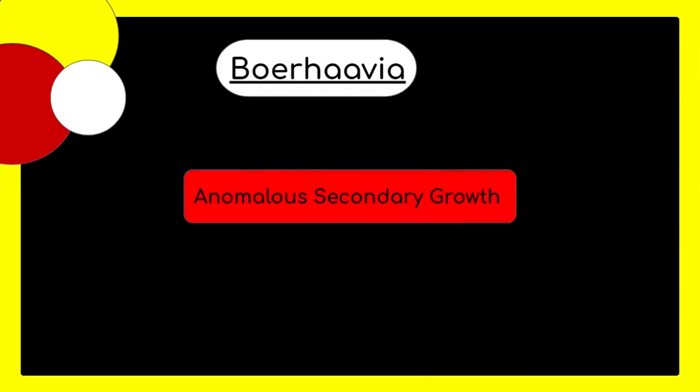So, dear students, today we will discuss about anomalous secondary growth in Boerhavia. Anomalous secondary growth is an abnormal type of secondary growth that occurs due to deviations from normal secondary growth. And this deviation has been found in many angiosperms.